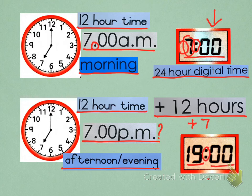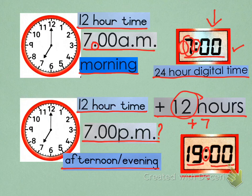So to change from the morning time, we add on our 12 hours. It was 7 plus 12, and we get 19 — that's what it is in the evening time. I hope you're going to have fun doing your activities today.